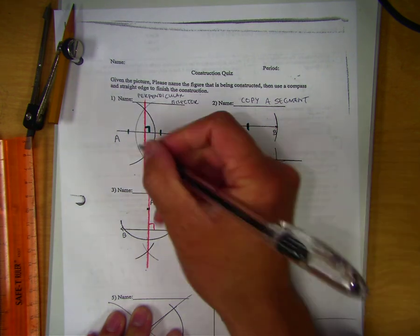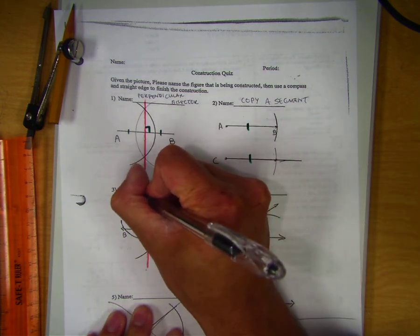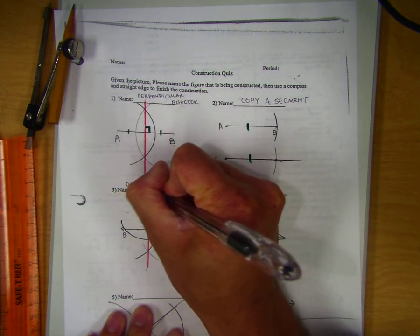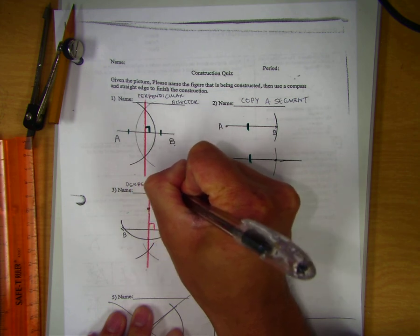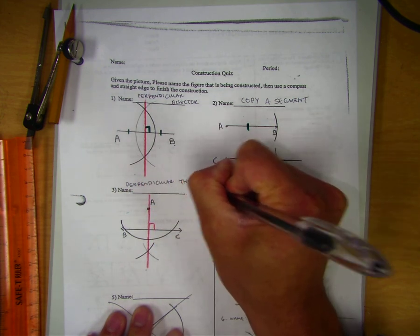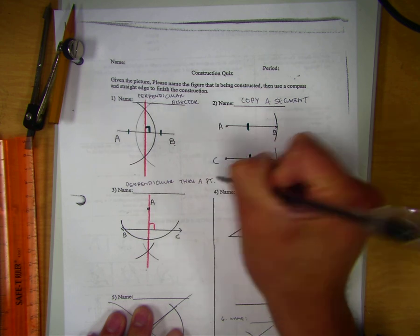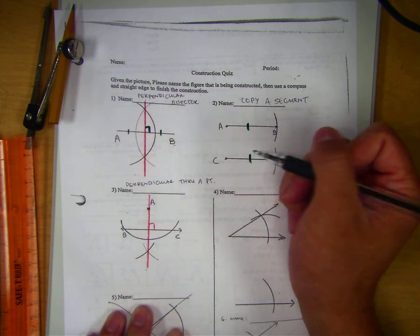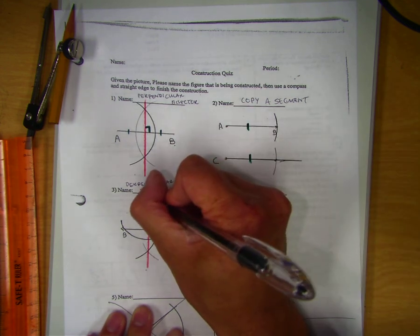And this is called constructing a perpendicular through a point. Class, where is that point? On or off? Off the line.